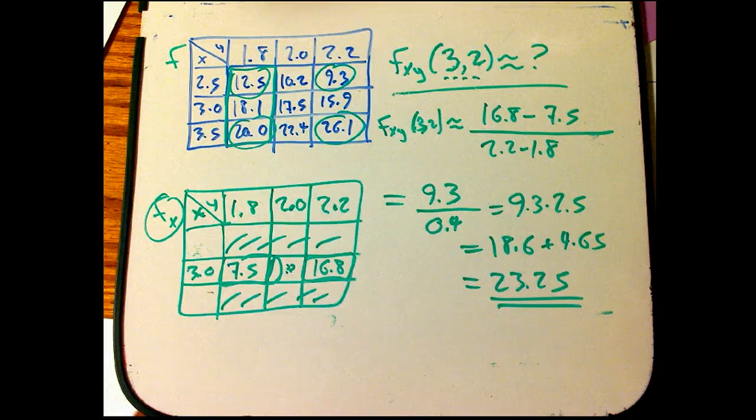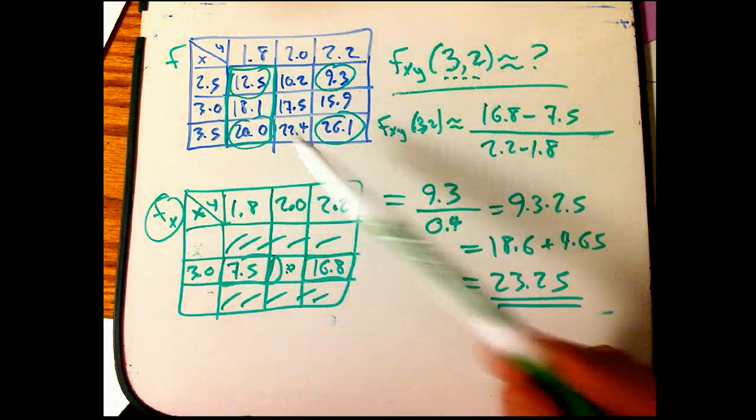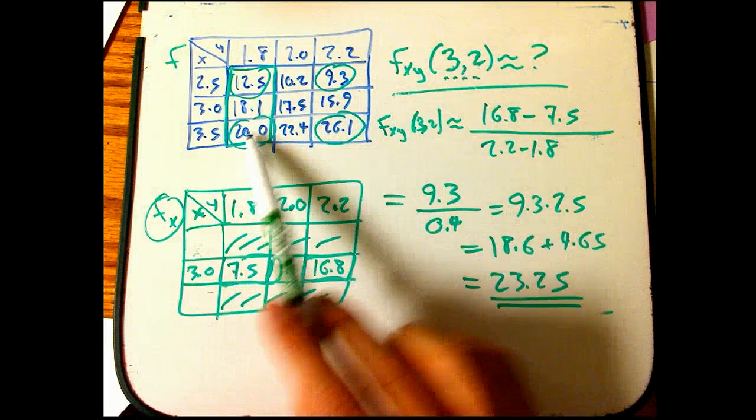So, kind of a multi-step procedure. But I want to point out something that's actually a very interesting theoretical import. Notice the actual original values. Notice what got used. It's these circled ones. It's these four values.